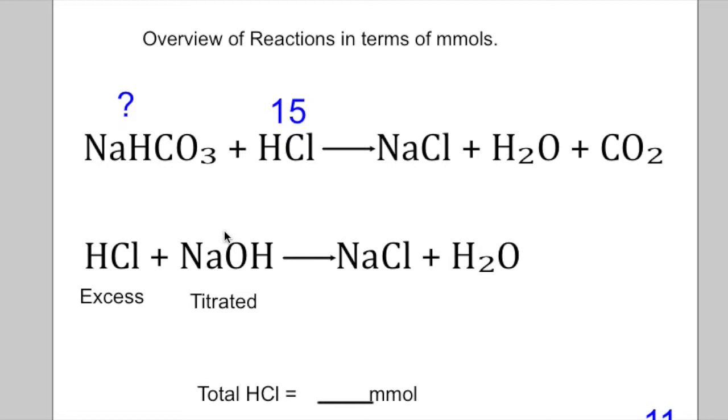The next step is to figure out how much excess HCl, and so we're going to titrate using sodium hydroxide. So let's say that when you add 4 millimoles, you lose that red color.